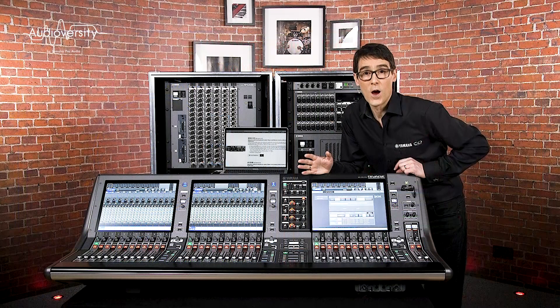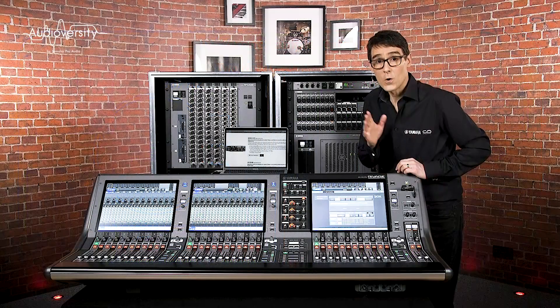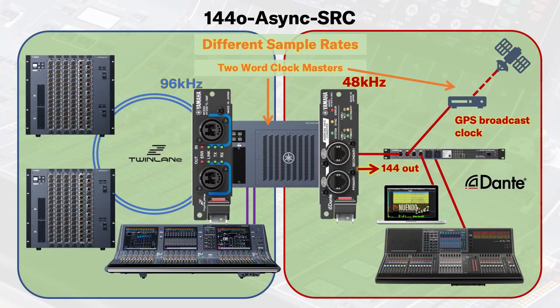Or if you need only inputs, you can choose 144i async SRC to allow 144 inputs at a different sample rate but no outputs. Or if you only need outputs but a lot of them, select 144o async SRC to allow 144 outputs but no inputs. That would be useful if you have to make a lot of splits or submixes out from a live sound mixer to a broadcast studio which runs from a different word clock source.